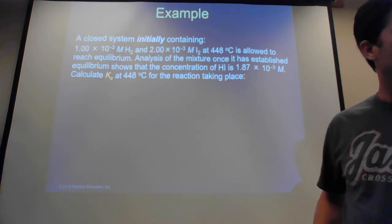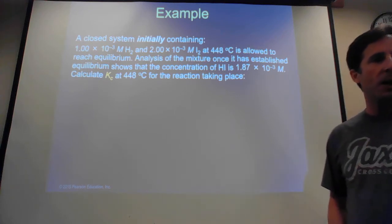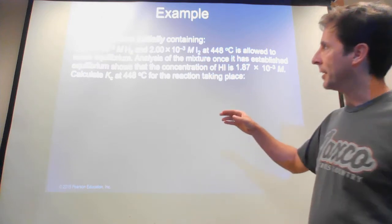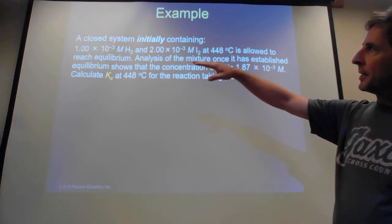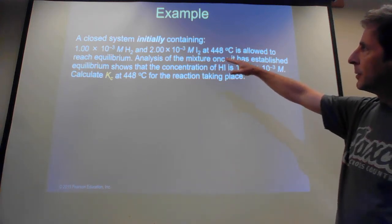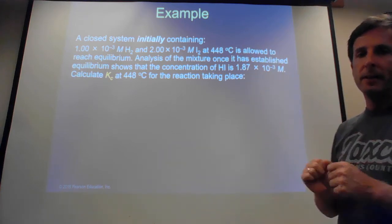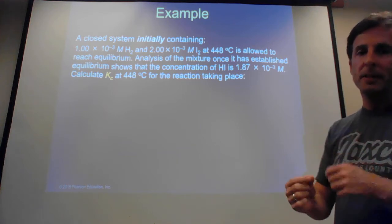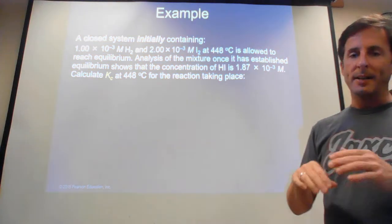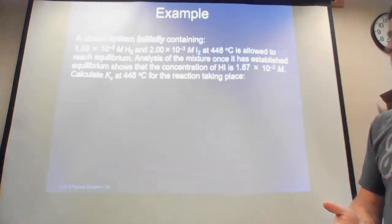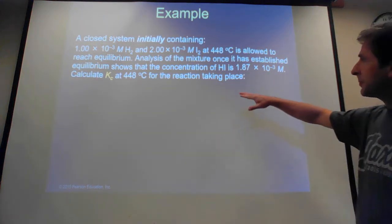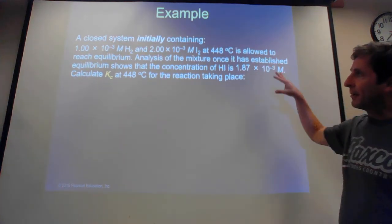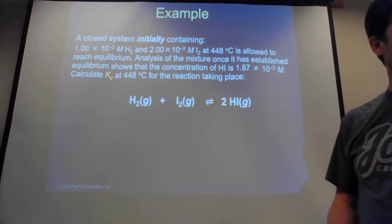For our first example, we have a reaction of hydrogen gas with iodine gas to form HI. The initial concentration when we mix together is 1.00 × 10⁻³ M hydrogen gas and 2 × 10⁻³ M iodine gas. We close the container and let it reach equilibrium, where forward and reverse reactions move at the same rates and concentrations stabilize. At equilibrium, the concentration of HI ends up being 1.87 × 10⁻³ M, and from that we should be able to solve for Kc.